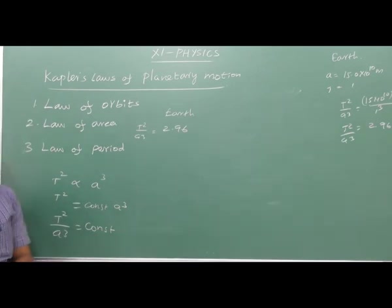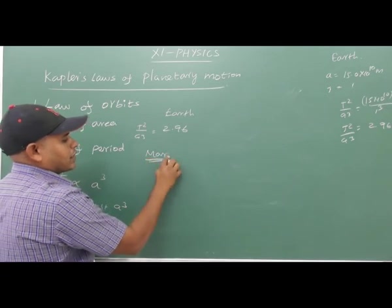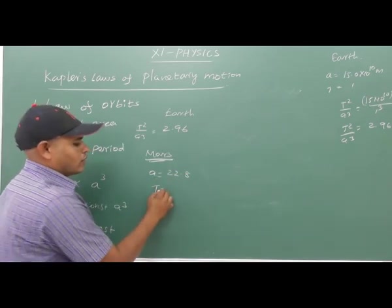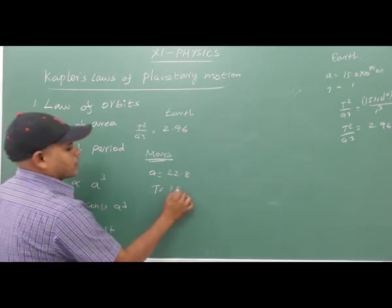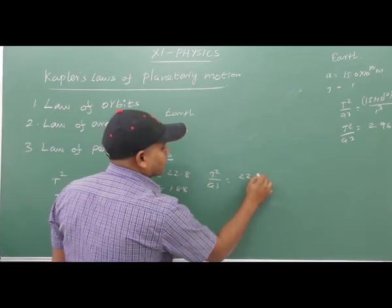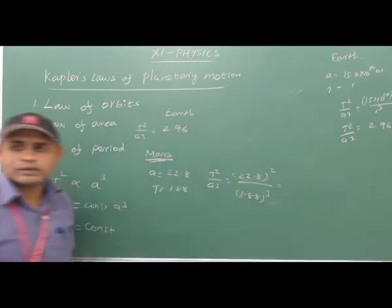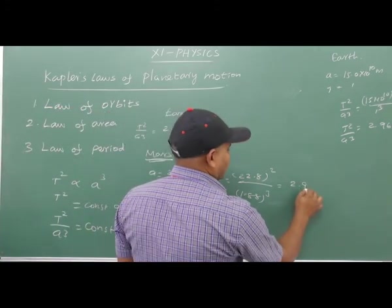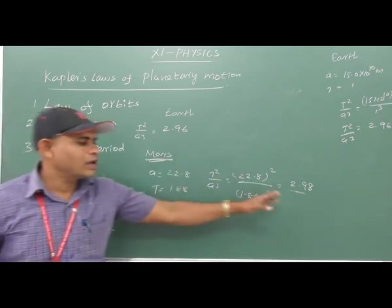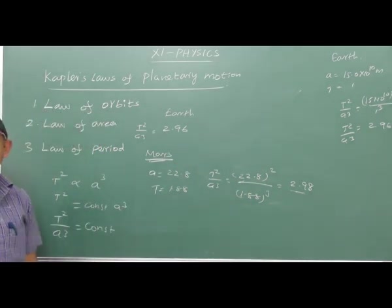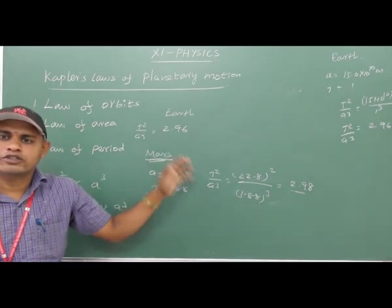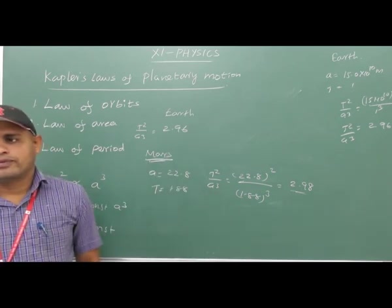For Mars: A is 22.8 and T is 1.88 years. The formula T²/A³ gives 1.88² divided by 22.8³, which is approximately 2.98. This is more or less constant — 2.96. For any planet — Mercury, Venus, Earth, Mars, Jupiter, Saturn, Uranus, Neptune — the value of T²/A³ is approximately constant: 2.96, 2.3, 3.1. These are all very near, confirming the constant.